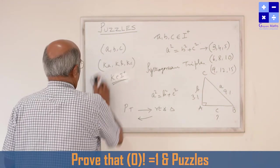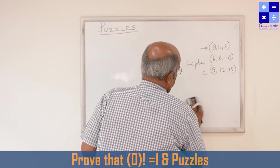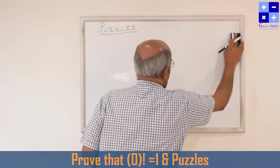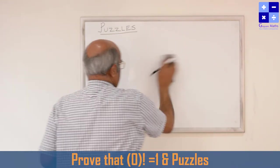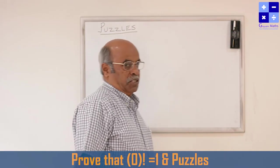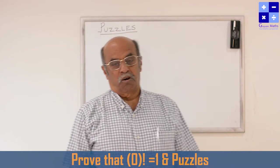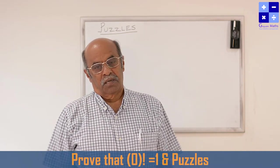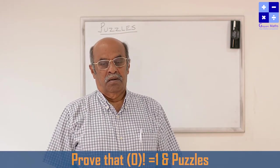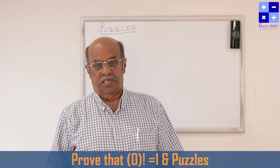Let's come to one more concept. In higher classes, you study the binomial theorem. Before going to the binomial theorem, you study permutations and combinations. Before coming to permutation and combination: permutation is a matter of arrangement, and combination is a matter of selection.